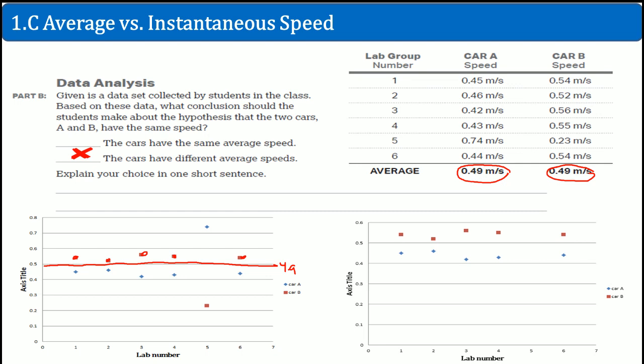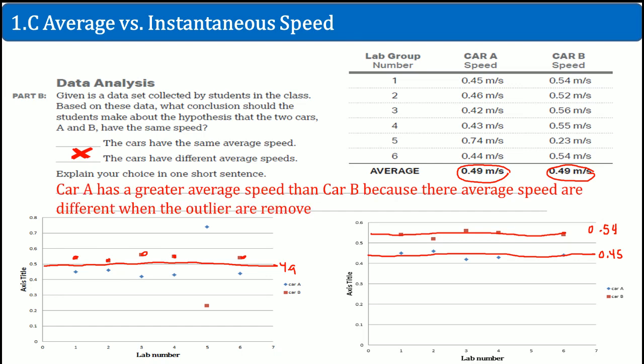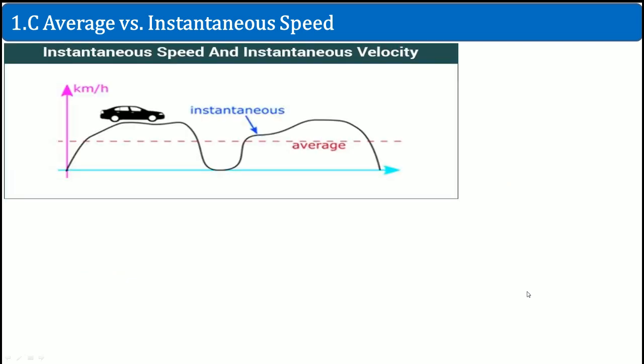What happens if I take those two data points out? It should look like this. So now I'm going to redo it. The average should be something like this, which can be roughly 0.54. If you do this, it should have been roughly 0.45. So car A actually has a greater average speed than car B because the average speeds are different when the outliers are removed. And I show it graphically on the left-hand side, on the right-hand side here, on how it looks like when the outliers are removed. You should see the average speed is greater for the red, which is car B, and on bottom is car A, which is in blue.